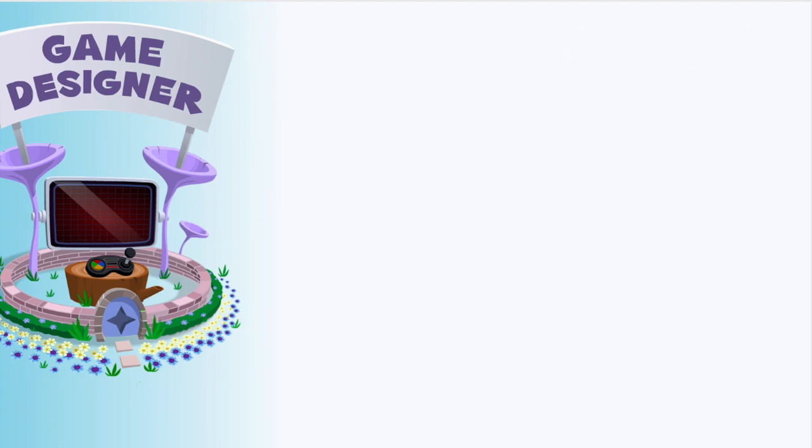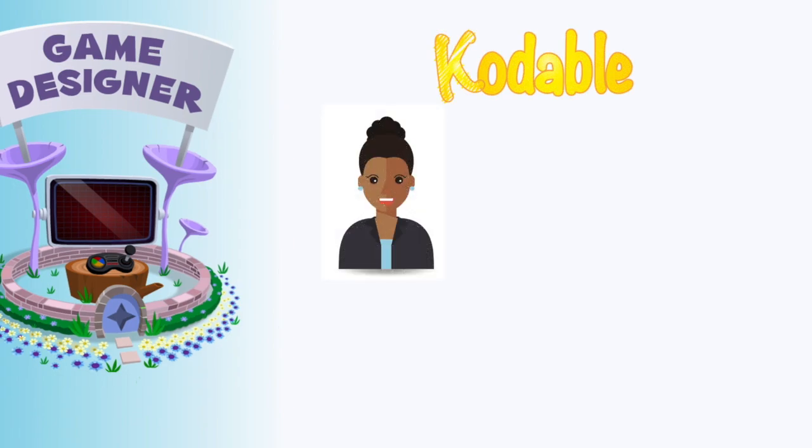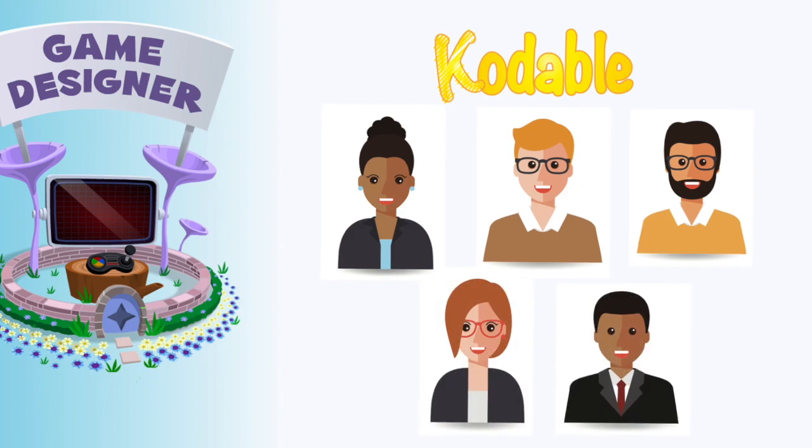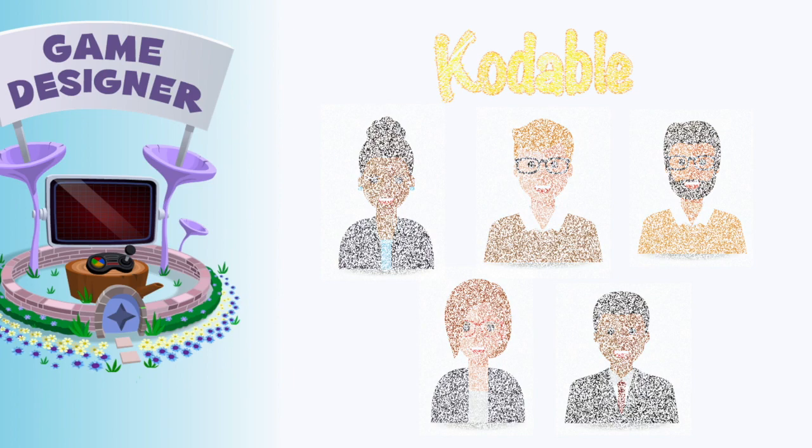So what goes into making a game? Well, people! Here at Codable we have two programmers, one artist, one head of product, and one project manager all working on the game you love to play. That's five people who collaborate and work together to make one game come to life.